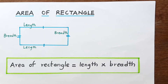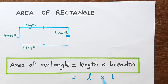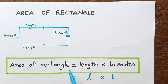If you have the spelling on the left side, then area of rectangle is equal to L into B. Here, L is small letter and B is small letter. So, area of rectangle is equal to L into B.